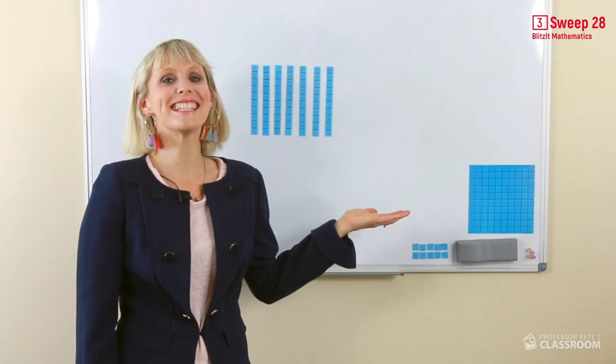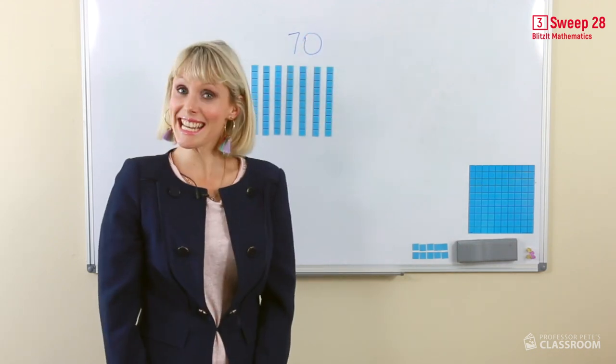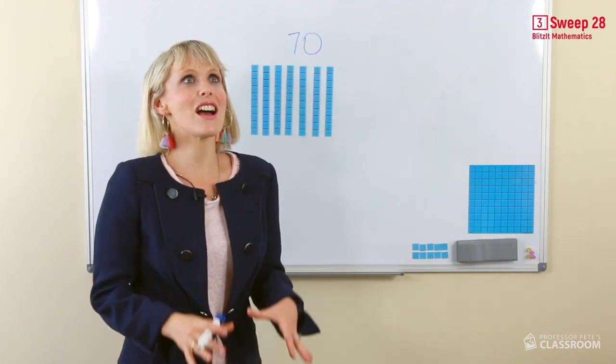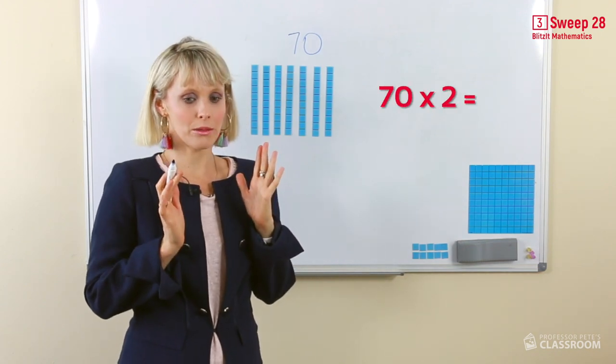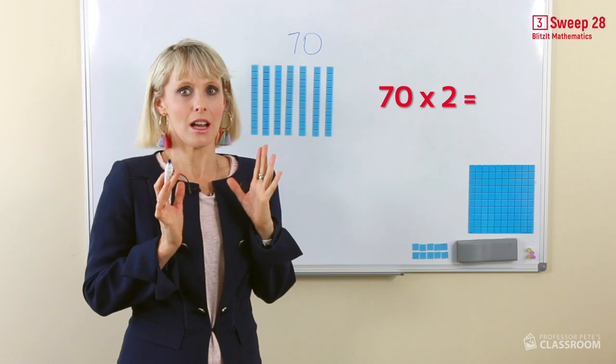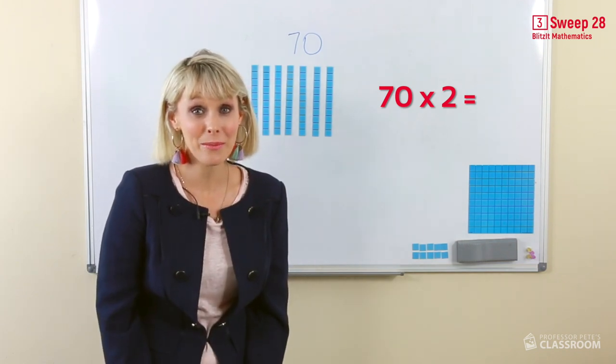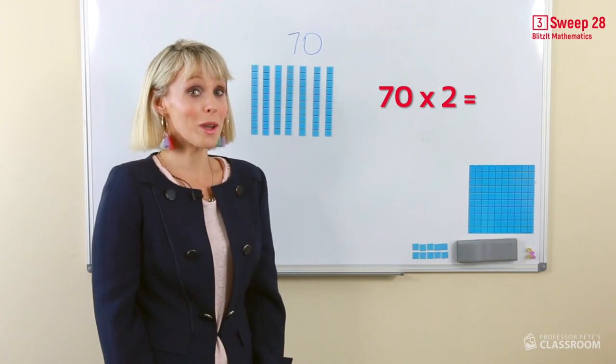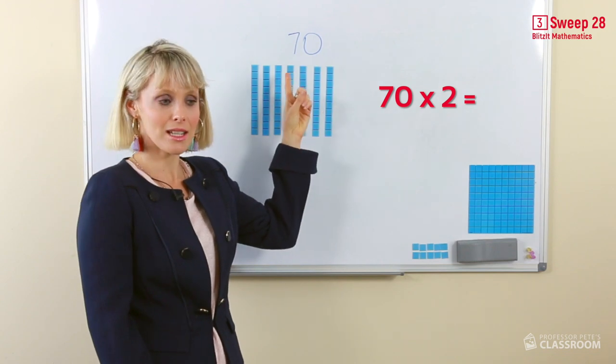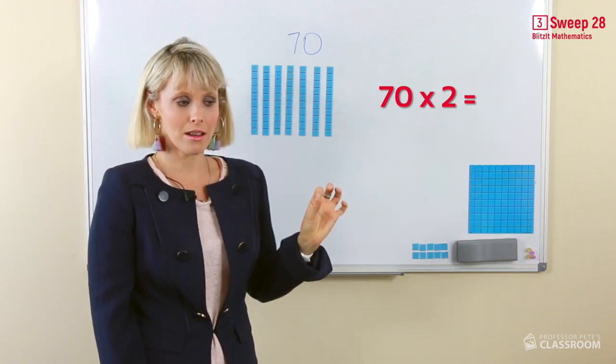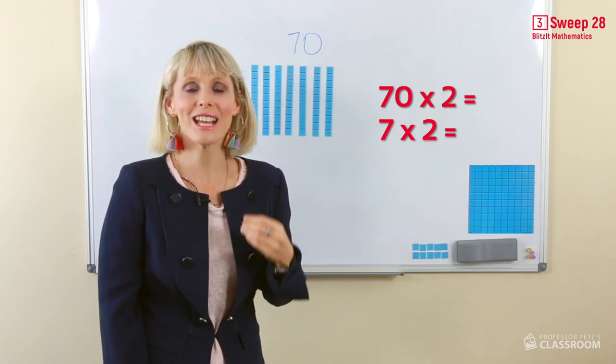Here we have 70. Another way of saying 70 is 7 tens. Now doubling 70, we're getting past 100. I feel a bit nervous. Do you sometimes feel a bit nervous with bigger numbers? We can do this. Now we think, what do we know? 70 is 7 tens. What's double 7? I know that. It's 14.